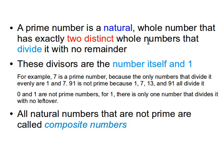It's a whole number that has exactly two distinct other whole numbers. These two must be distinct — they need to be different from each other. When we divide that number by any of those two distinct numbers, we get another whole number without a remainder, without a decimal point. These two divisors are the number itself and one.